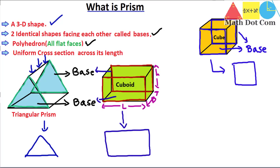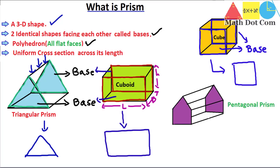Another type of prism is a pentagonal prism. This shape has a base with five corners. If we take the cross-sectional view we get a pentagon. A pentagonal prism satisfies all four properties: it is a 3D shape, it has two identical pentagonal faces facing each other as bases, it is a polyhedron with all flat faces, and it has a uniform cross-section across its length.